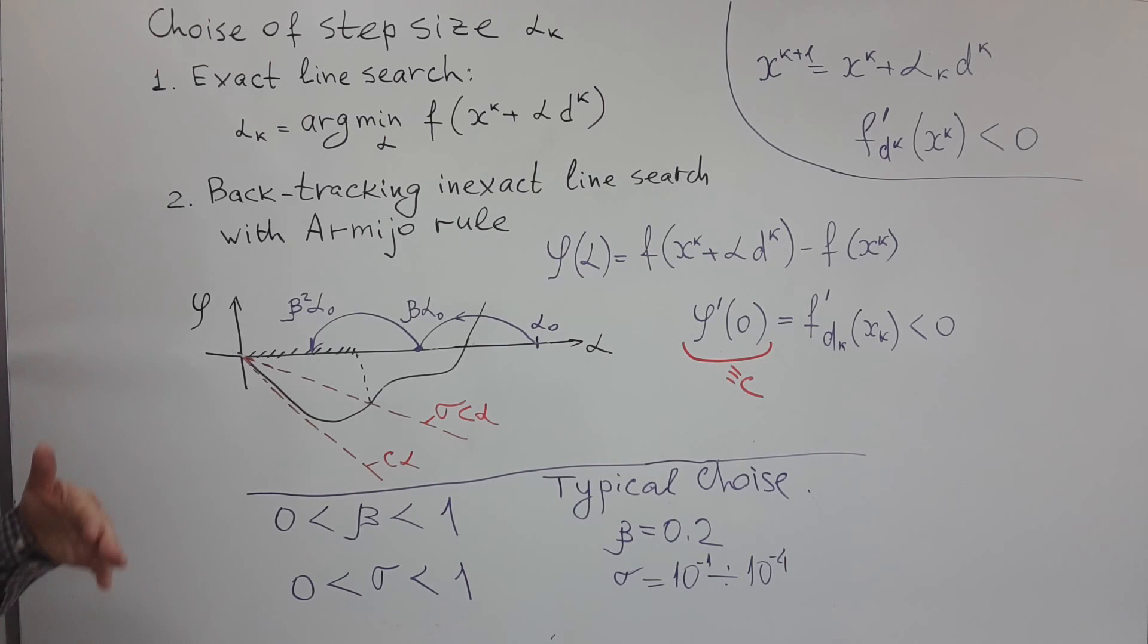And there are proofs for many optimization methods. For instance, when they use Armijo rule, one can show that the algorithm has convergence.